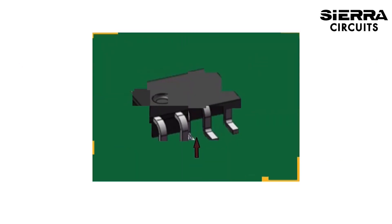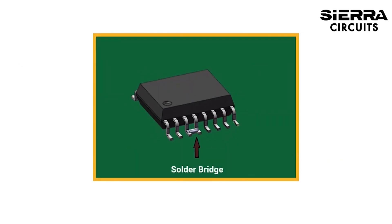Solder bridging occurs when solder is deposited across two conductors that should not be electrically connected. This can lead to electrical shorts. Excess solder paste deposition and placement inaccuracy are the causes of this issue. You can avoid this by maintaining the right solder paste metal to flux weight ratio, an appropriate reflow profile, and accurate component placement.